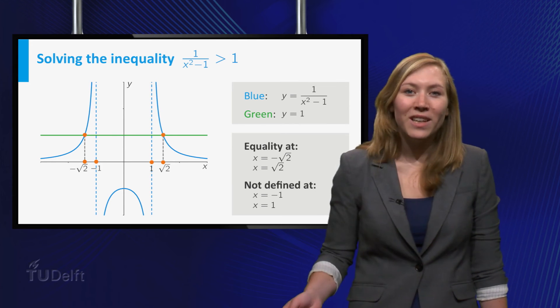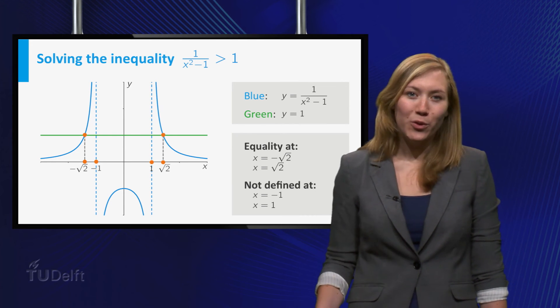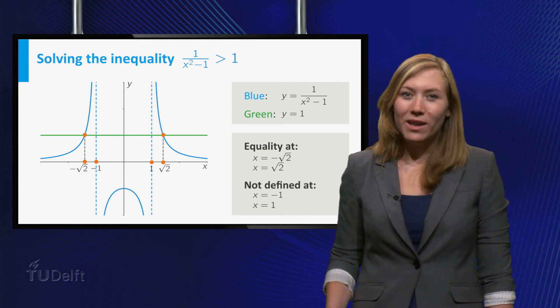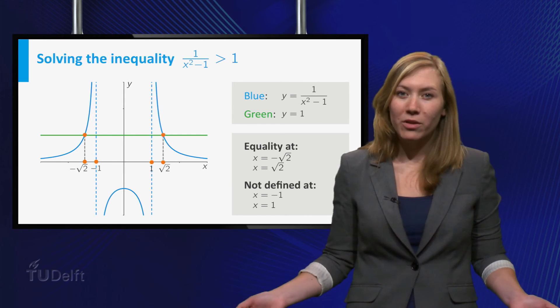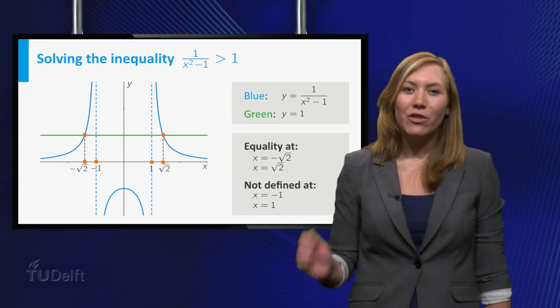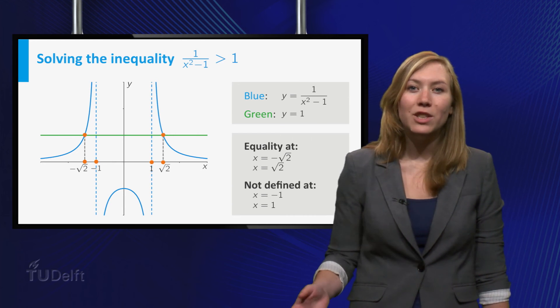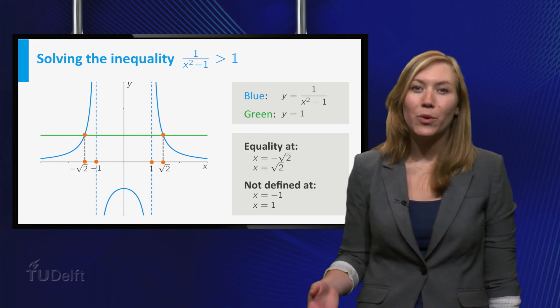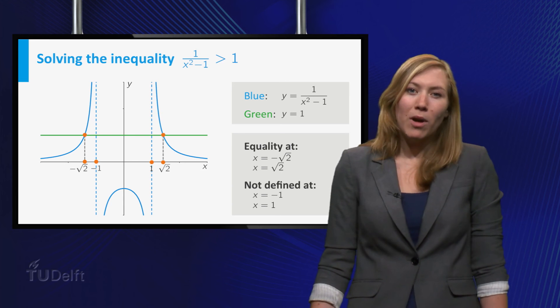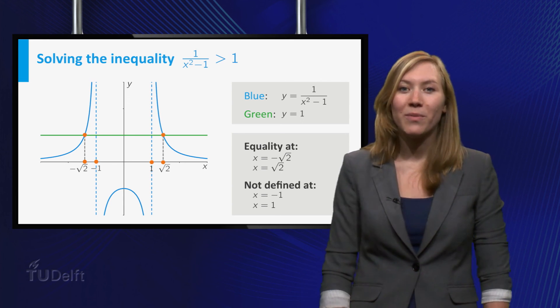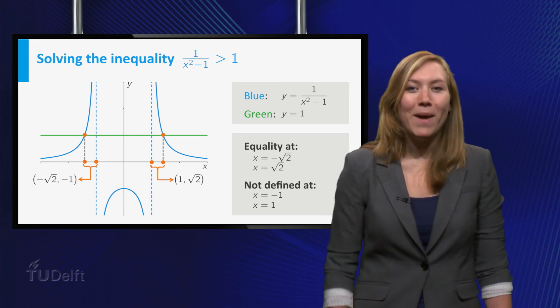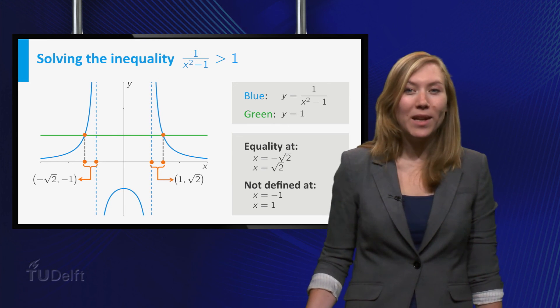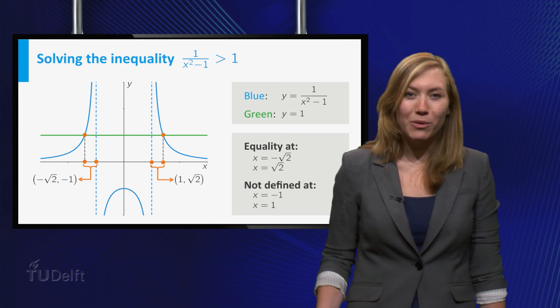These four points then divide the real line into five intervals. On each interval, either the inequality holds for all points or for none of them. And you can simply check at one point in each interval whether the inequality holds or not. Since we have a graph, it is even easier to tell where the inequality holds: at the intervals minus the square root of 2 to minus 1 and 1 to the square root of 2.